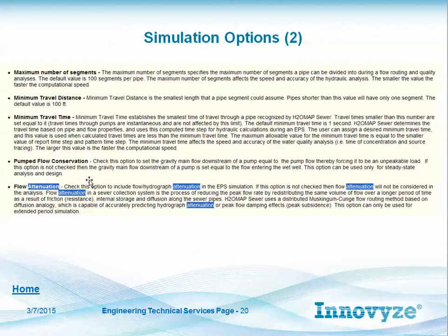Sometimes people ask whether InfoSewer or H2O MapSewer does attenuation. Yes, it does — attenuation is based on the number of pipe segments. InfoSewer divides pipes into a number of segments that can be user-defined, typically at least ten feet or one second apart. If you're having difficulties with continuity, you can adjust that or use the flow attenuation option so it works more as a diffusion wave solution. These options are used to attenuate the flow.